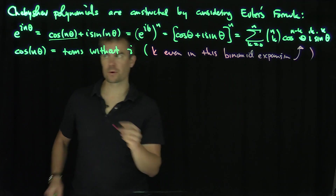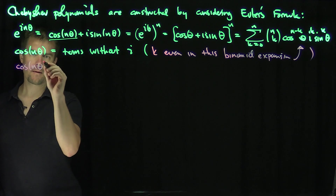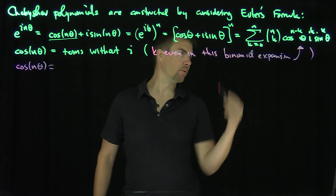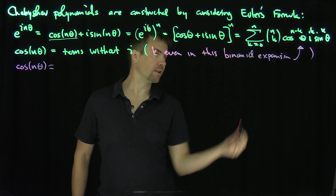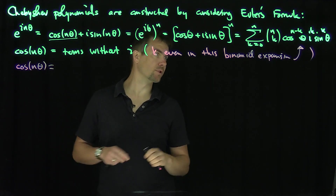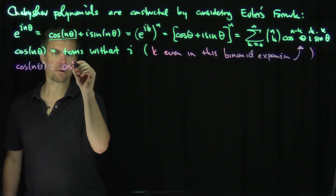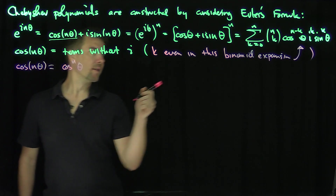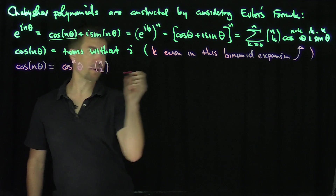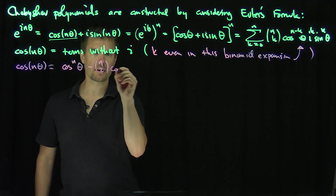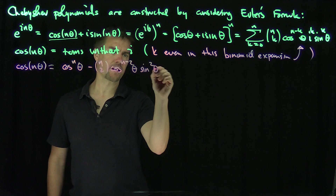Let's look at the first few terms. When k=0, we get n-choose-0 times cosine^n(theta), which is just cosine^n(theta). When k=2, we get minus n-choose-2 times cosine^(n-2)(theta) times sine^2(theta), because i^2 = -1.